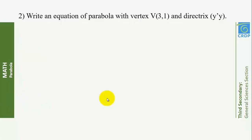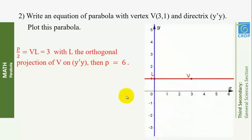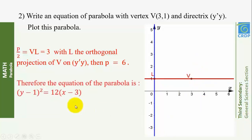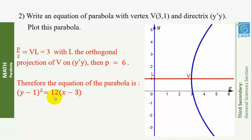Write an equation of a parabola with vertex V(3, 1) and directrix x'y'y. Plot this parabola. Let L be the orthogonal projection of V on y'y. We know that P/2 = VL, therefore P = 6. Since the directrix is y'y, the focal axis is parallel to the x-axis. Since the directrix is always outside the parabola, the equation is (y − 1)² = 12(x − 3).